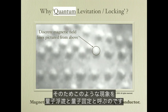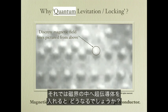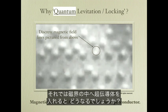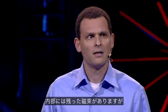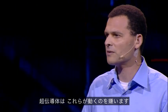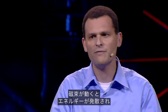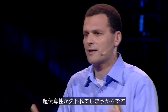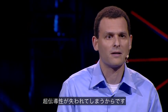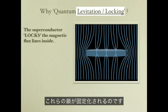This is why we call this effect quantum levitation and quantum locking. When we put a superconductor inside a magnetic field, strands of magnetic field remain inside. The superconductor doesn't like them moving around because their movement dissipates energy, which breaks the superconductivity state. So what it does is lock these strands — called fluxons — in place.